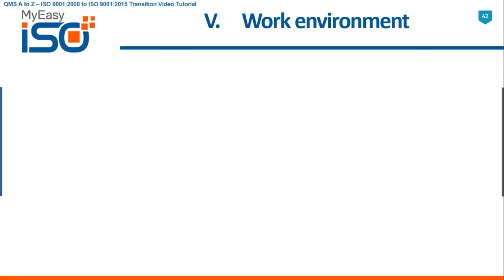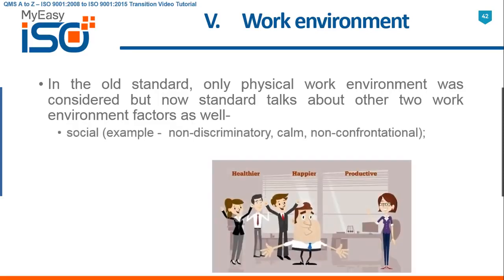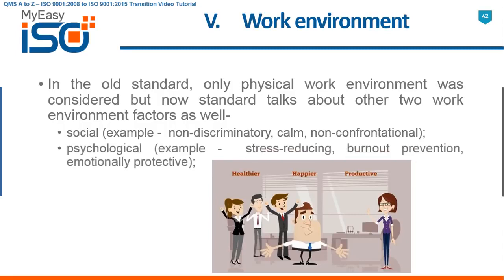V — Work Environment. In the old standard, only physical work environment was considered. But now, the standard talks about two other work environment factors as well. Social — for example, non-discriminatory, calm, non-confrontational. Psychological — for example, stress reducing, burnout prevention, and emotionally protective.